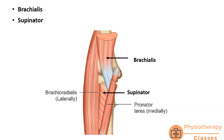Which structures form the floor of cubital fossa? There are two muscles present in the floor: in the upper part is brachialis, and in the lower part near the apex is the supinator muscle.